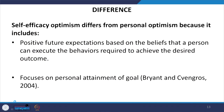The difference between self-efficacy optimism and personal optimism is that self-efficacy optimism includes positive future expectations based on the belief that a person can execute the behaviors required to achieve the desired outcome. The focus is on the personal attainment of goals — Bryant and Wengros (2004) talked about how one's focus on personal attainment of goals leads to more success and positive outcomes.